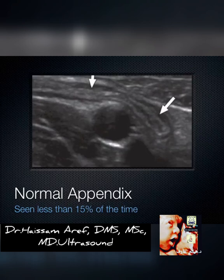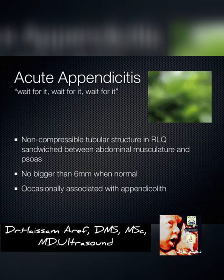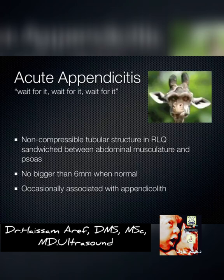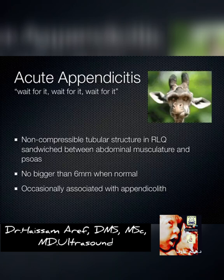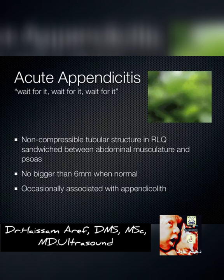As you get really proficient with ultrasound, you're searching for that non-compressible tubular structure in the right lower quadrant sandwiched between the abdominal musculature and the psoas muscle. All of a sudden you get lucky and it pops its head out at you, and then it's gone again. You end up saying, wait, did I just see it? Hit freeze and scroll back, or keep compressing and there it is again. There's a lot of art here — it's very operator-dependent, but over time you do get better with it.